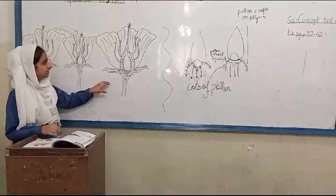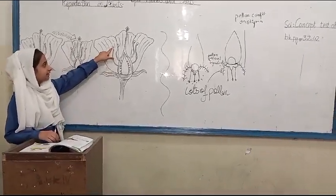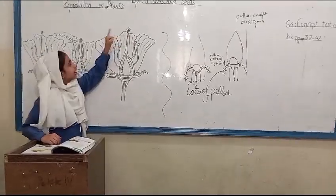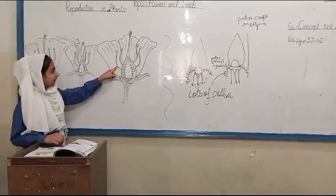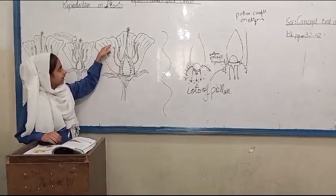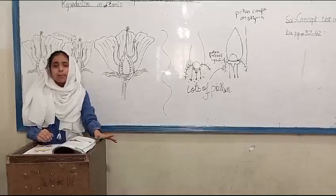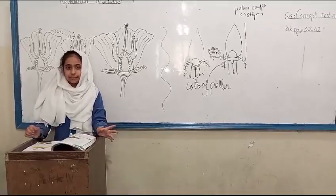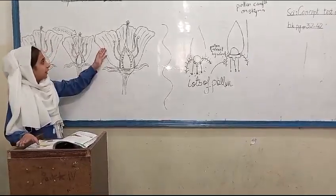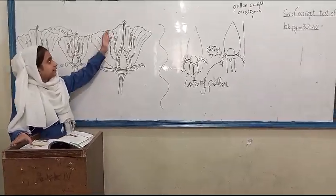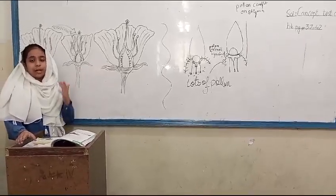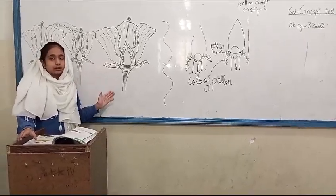Pollination is a process when the anther releases pollen grains so they can transfer from the anther to the stigma of another plant. Pollination is a process where pollen grains transfer to the stigma of another plant, or the pollen grains are found in the same plant and it can be pollinated in the same plant.